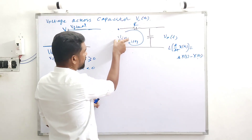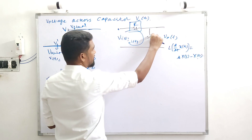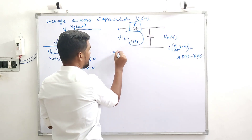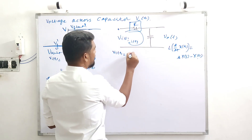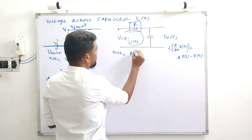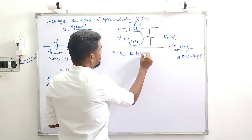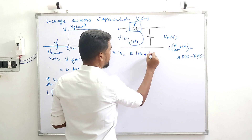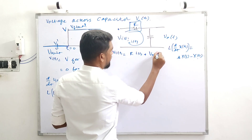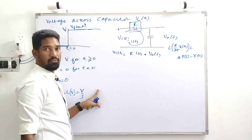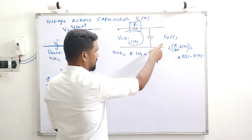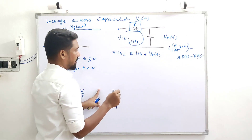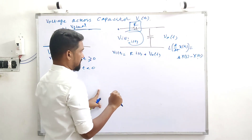This voltage drop will be equal to this drop plus this drop. Vi of T will be equal to R into I of T plus V_not of T, which is equal to VC of T — voltage across capacitor.